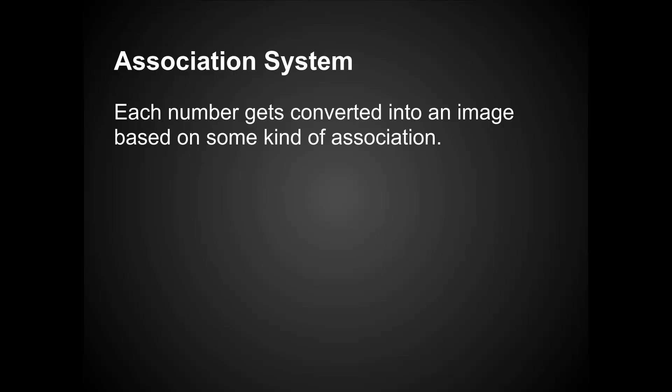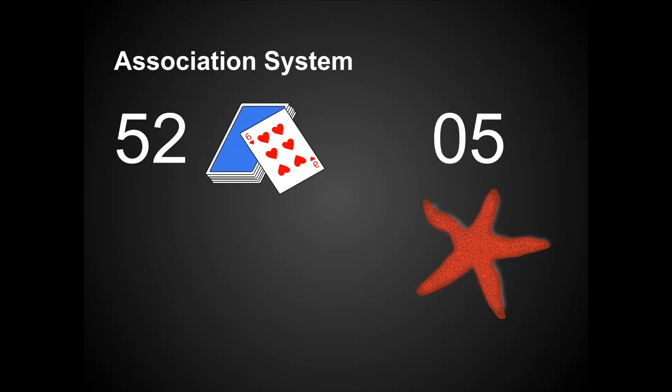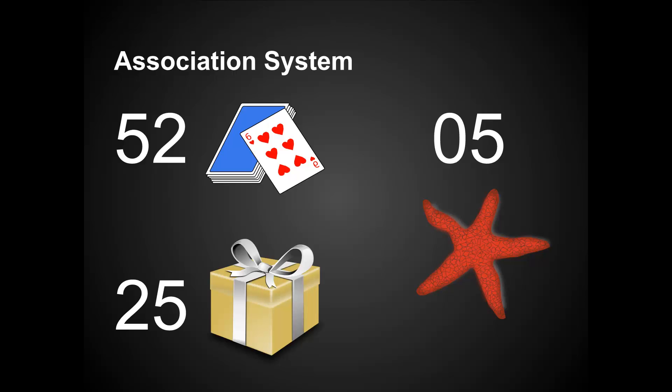With the association system, each number gets converted into an image based on something that it reminds you of. So if you see the number 52, it might remind you of a deck of cards because a deck of cards has 52 cards in it. A starfish might be 05 because there are five arms on a starfish. And 25 might remind you of December 25, and you could picture a Christmas present. These images come from Andy Bell, who was the 1998 world memory champion.